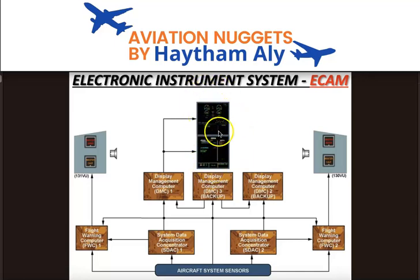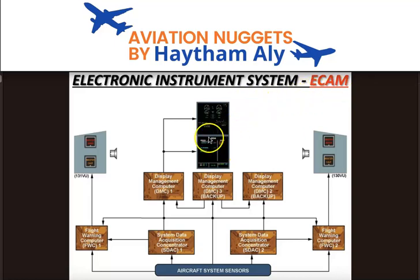The upper E-CAM is called the Engine and Warning Display, and the lower E-CAM is called the System Display. The E-CAM system, which is part of the Electronic Instrument System, displays system pages, fault data, operational data, warnings, and engine display.